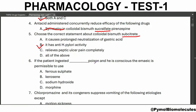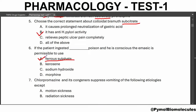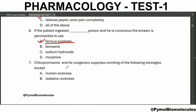If the patient ingested ferrosulfate poison and he is conscious, the emetic permissible to use is ferrosulfate. The most dependable emetic used to expel ingested poison is the intramuscular apomorphine. Chlorpromazine and its congeners suppress the vomiting of the following etiologies except motion sickness.